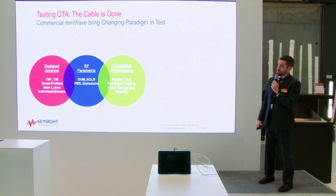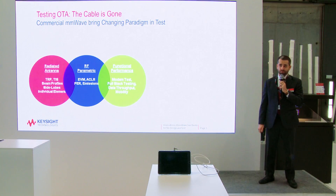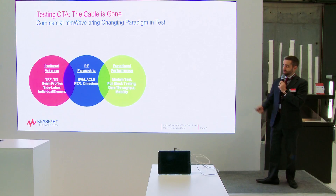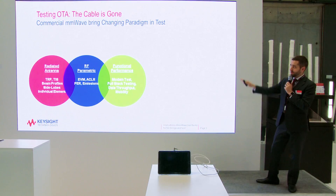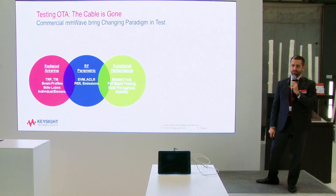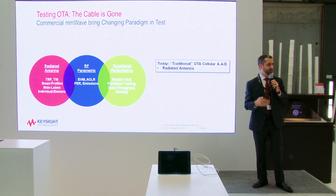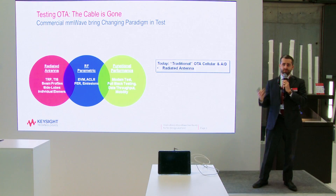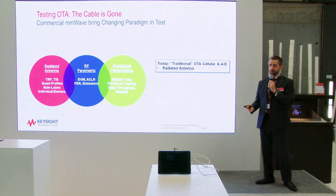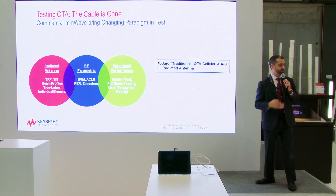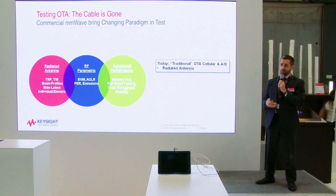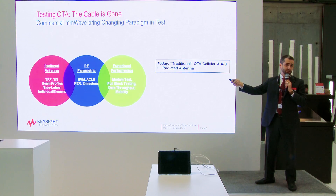So what is OTA? OTA is pretty much all things to all people, but we break it down into about three categories: radiated antenna, RF parametric, and functional performance. These are types of measurements you might make in your traditional cellular or Wi-Fi devices. In the traditional OTA space, it was really radiated antenna measurements — done for many years in cellular at sub-6 gigahertz, and even 28 gigahertz for electronic warfare and commercial or satellite communications.